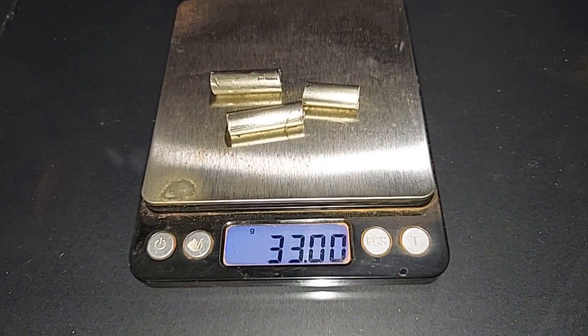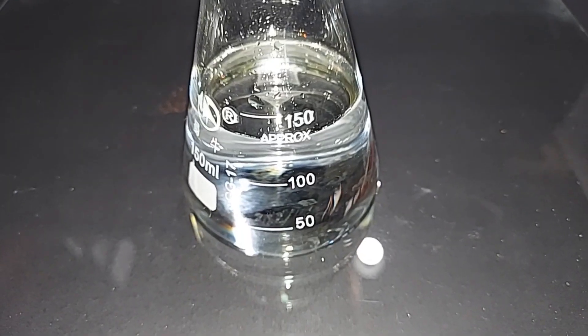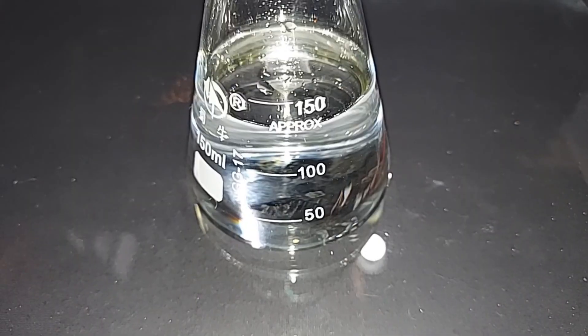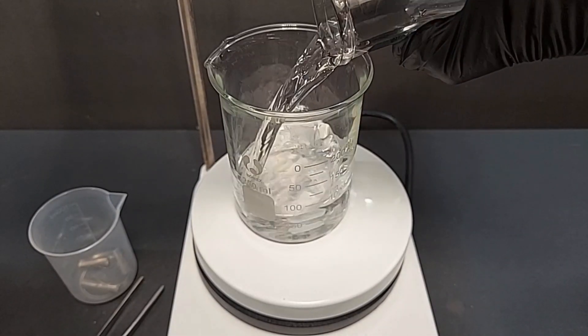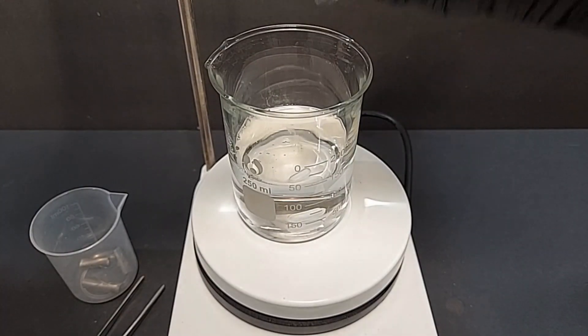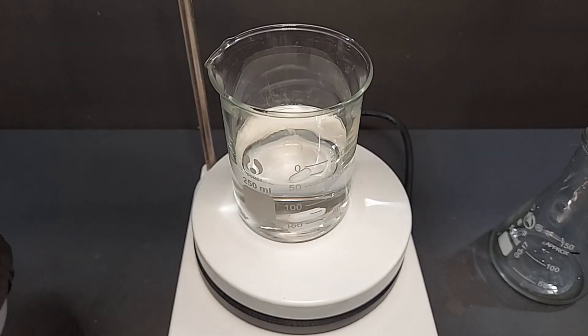This took a little bit of doing honestly, but here's 33 grams of pure nickel metal pre-weighed, and 140 milliliters of 70% nitric acid pre-measured. First thing, of course, is pour our nitric acid into this beaker here.